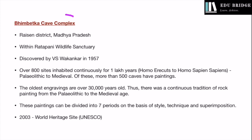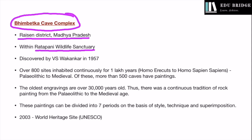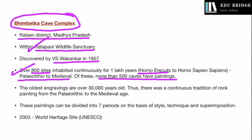Let us move on to the Bhimbetka cave complex. Bhimbetka is synonymous with Indian rock art and is considered the most iconic rock art site in the entire subcontinent. It is located in the Raisen district of Madhya Pradesh, situated within the Ratapani Wildlife Sanctuary. It was discovered by V.S. Wakankar in 1957. It has over 800 caves that were inhabited continuously for 1 lakh years, right from the period when the Homo erectus genus was roaming. Of these 800 caves, more than 500 have paintings — that is why it is so important.